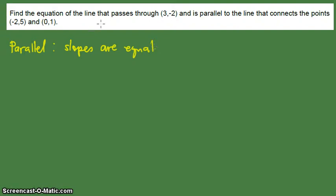There's an equation of the line that passes through (3, -2) that is parallel to the line that connects the points (-2, 5) and (0, 1).